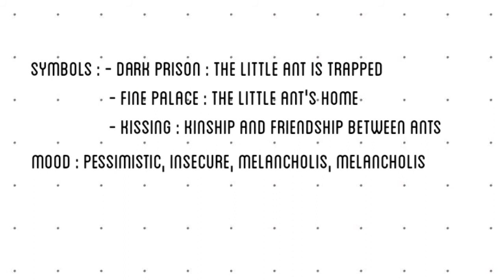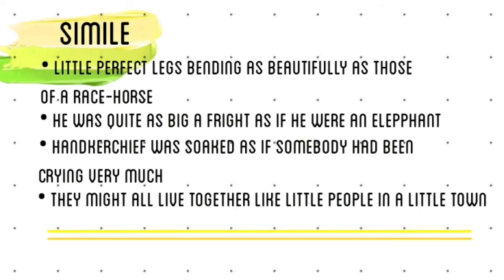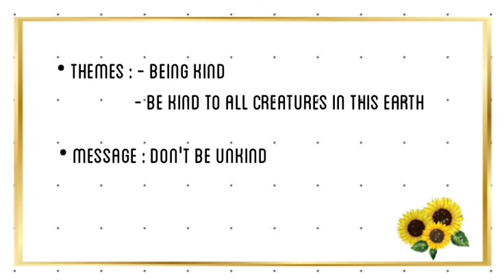The third mood is sentimental and melancholy — this mood happens when Mary is worrying about the little ant. Next is simile — simile is comparing something using 'like' or 'as.' First: 'little perfect legs bending as beautifully as those of a racehorse,' comparing the ant's legs with a racehorse. Second: 'he was as big afraid as if he were an elephant,' comparing the little ant with an elephant. Third: 'handkerchief was soaked as if somebody had been crying very much,' comparing the soaked handkerchief with someone crying. Fourth: 'they might all live together like little people in a little town,' comparing the ants' life with people's life.